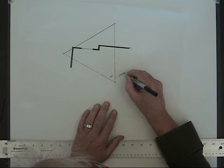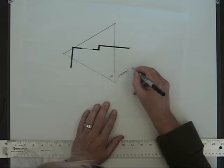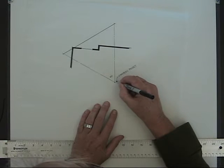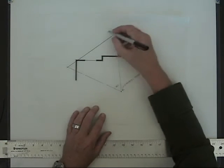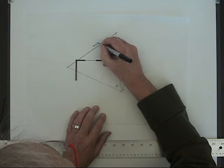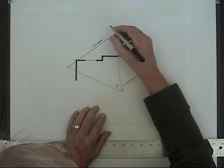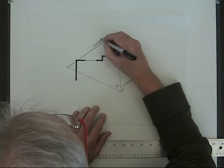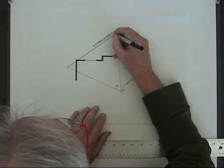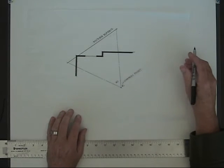The station point where we're looking at this interior is located right here and back here is the picture plane. These little indications will become more apparent as we get into our final layout drawing.